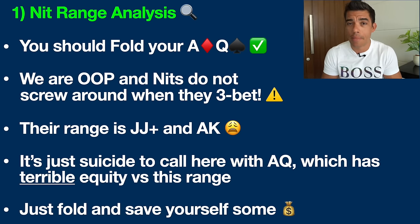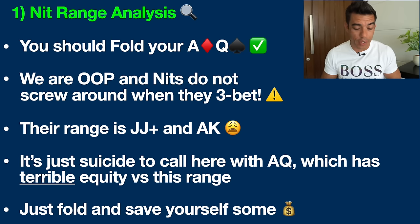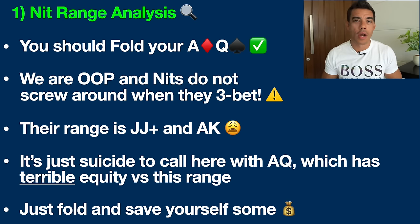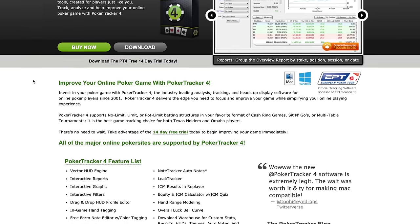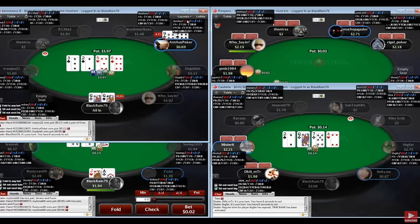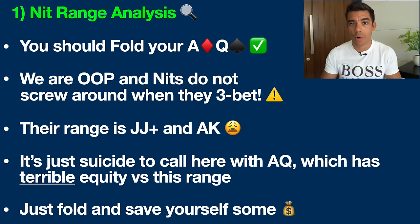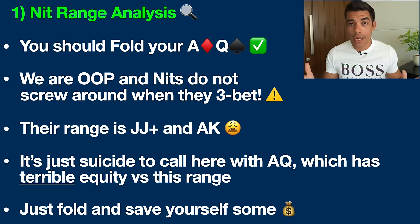Why do we fold versus this player type? Being out of position is a massive, statistically proven disadvantage at the poker tables. If you play online poker, you can use a program like Poker Tracker and filter for hands when you play in position versus out of position — you're going to see that you're losing far more out of position. So we always want to be more inclined to either lay it down or take the even more aggressive route of four-betting when we're out of position.